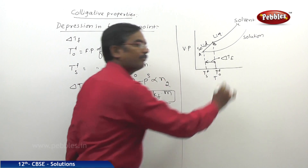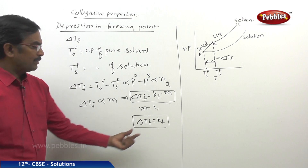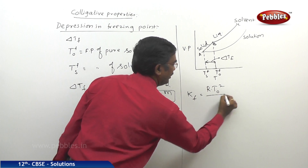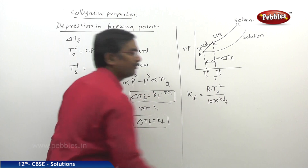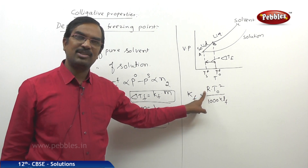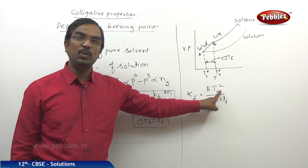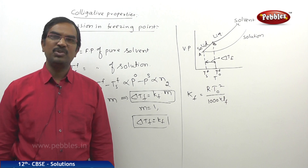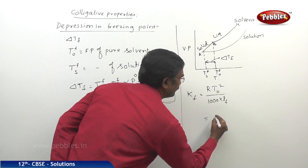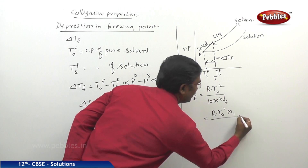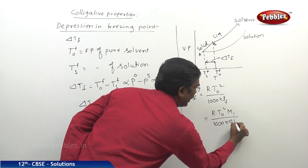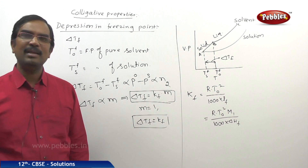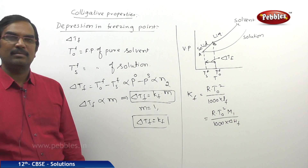The gap from the solution curve to the solvent curve represents delta Tf. The expression for Kf is given by R times T-naught squared divided by 1000 times Lf, where R is the gas constant, T-naught is the freezing point of the pure solvent, and Lf is the latent heat of fusion.